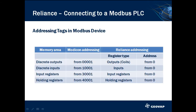In the Reliance system, the address of a tag defined within a Modbus device consists of a register type and an address. While memory areas of a different type in a Modicon device are addressed using an offset, tags in the Reliance system are addressed from 0 for each register type. For example, holding register 400001 in Modicon is equal to holding register 0 in Reliance.